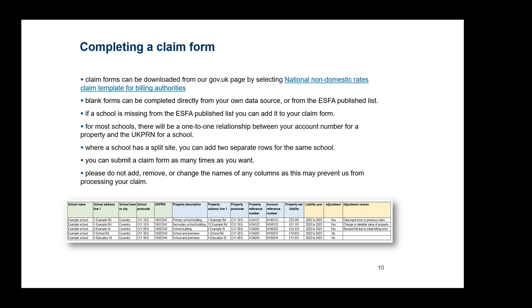Once your claim form is fully complete, upload it to the portal. You can submit a claim form as many times as needed — if a submission has missing properties, errors, or requires an in-year change such as a revaluation, simply resubmit and we'll pick up the latest dataset. Please do not amend the template format in any way — do not add, remove, or rename any columns — as this may prevent the automated validation from running and require you to resubmit the file.